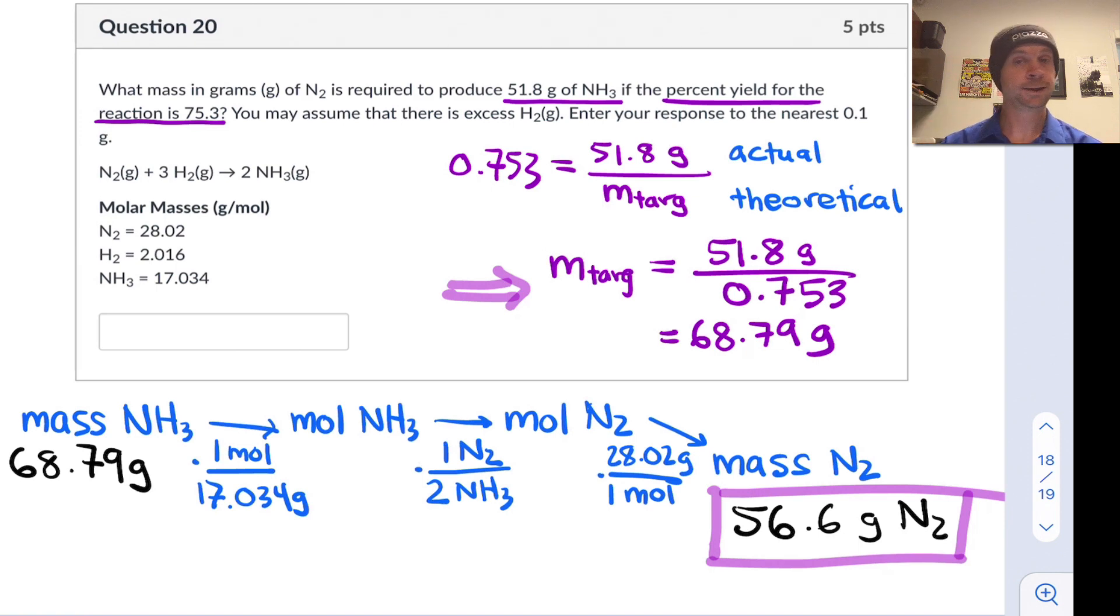But keep in mind, because the percent yield of the reaction is 75.3%, the actual yield we will get out is the 51.8 grams of NH3. And this is worth kind of working backwards and verifying just as a sanity check and making sure that we worked the problem correctly.